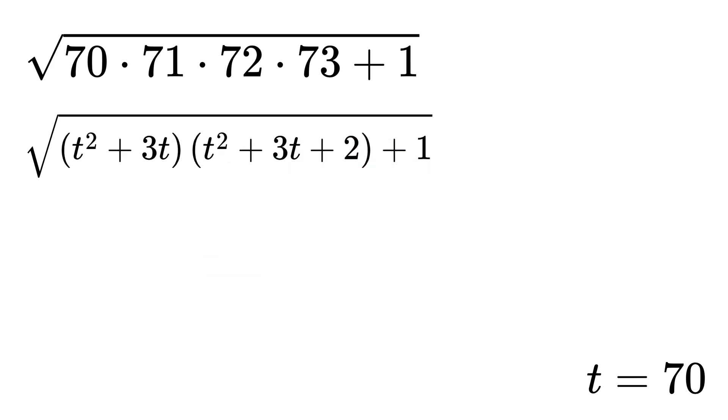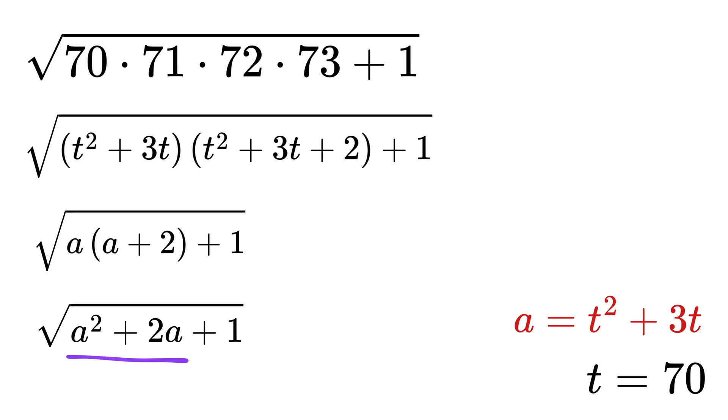Let a equal t squared plus 3t. Then the expression becomes square root of a times a plus 2 and then plus 1. Now multiply a times a plus 2, that gives a squared plus 2a.